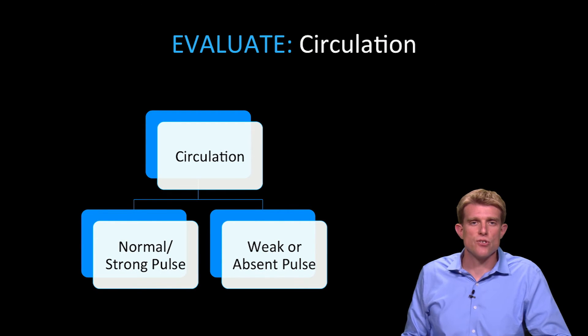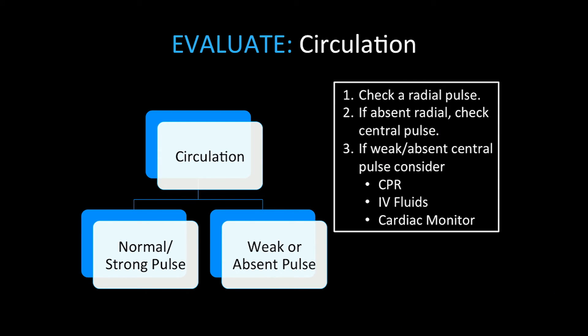As we move from B, we move on to C, or circulation. We're going to check for a weak or absent pulse. I like to start with a radial or peripheral pulse — in a very young child I might check a brachial pulse, but for everybody else I start with a radial pulse. If the radial pulse is present and strong, that generally indicates good perfusion of all the vital organs. If the radial pulse is absent, I quickly move to checking a central pulse, normally going directly to the carotid pulse. If the carotid pulse is absent, you're going to immediately think about CPR depending on the rest of the patient's condition. If it's weak, you're going to think about IV fluid and putting that patient on a cardiac monitor.